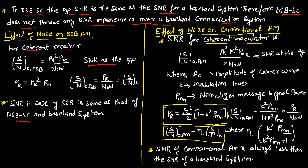Effect of noise on conventional amplitude modulation. For a coherent receiver, SNR at the output of AM equals AC²·K²·PMN / (2·N0·W), where AC is the carrier amplitude, K is the modulation index, and PMN is the normalized message signal power. This simplifies to SNR_AM = [K²·PMN / (1 + K²·PMN)] × (PR / N0·W) = η × SNR_baseband, where η = K²·PMN / (1 + K²·PMN). Therefore, SNR of conventional AM is always less than the SNR of a baseband system.